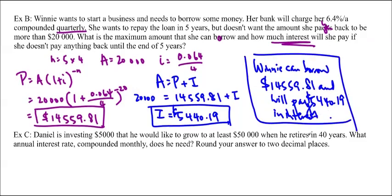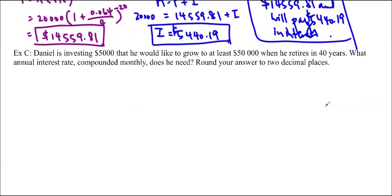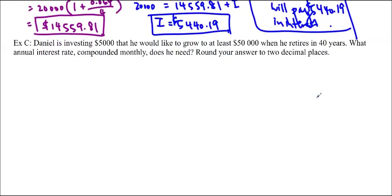Alright. Last question. Daniel is investing $5,000 that he would like to grow to at least $50,000 when he retires in 40 years. What annual interest rate compounded monthly does he need? Round your answer to two decimal places.